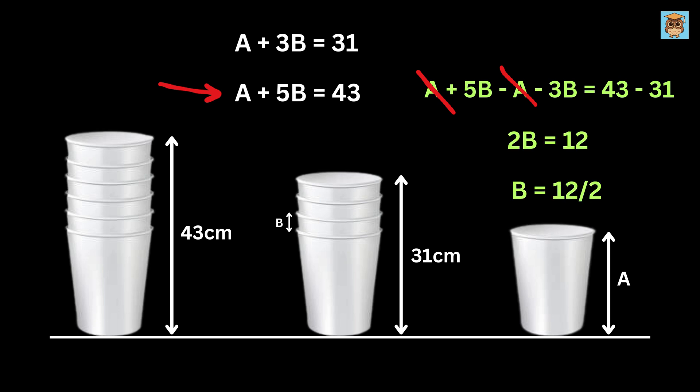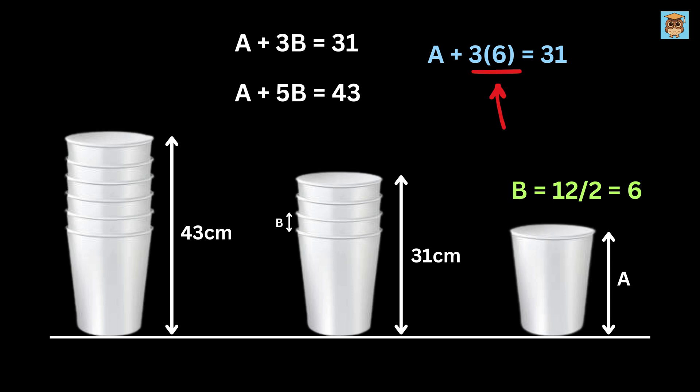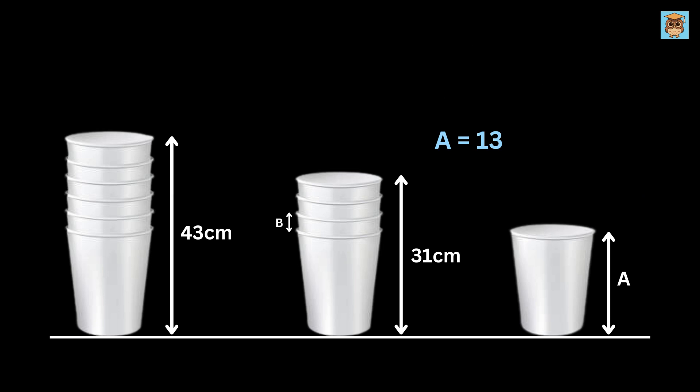Now substitute B here to get A plus 3 times 6 equals 31. This will become 18 and thus A equals 31 minus 18 or 13 centimeters.